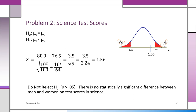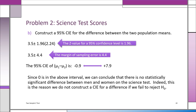Once you've said there's no difference, you're claiming men and women perform the same in science, so there's no reason to do a confidence interval — you've already accepted zero as the difference. Don't contradict yourself by constructing one. But to show what happens: 3.5 ± 1.96 × 2.24 gives a margin of error of 4.4. The CI runs from −0.9 to +7.9, and zero is clearly in that interval, reinforcing there's no difference.